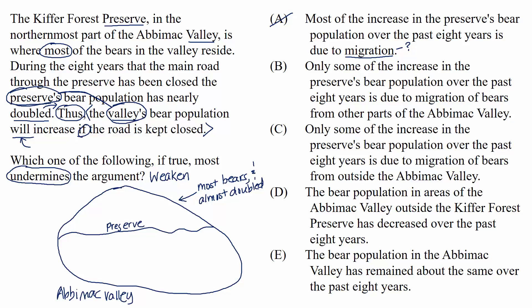Choice B: Only some of the increase in the preserve's bear population over the past eight years is due to migration of bears from other parts of the Abamac Valley. This choice could actually strengthen the argument. Just like in choice A, there's a possibility that a large part of the population increase is due to migration from outside of the valley, or lots of bears in the preserve making baby bears because the road is closed. That would help the arguer's case that the valley's bear population will increase if the road is kept closed.